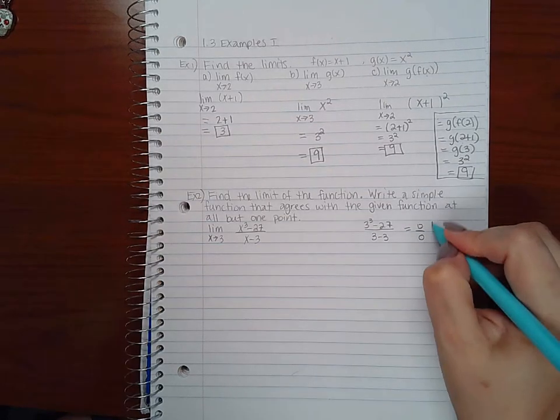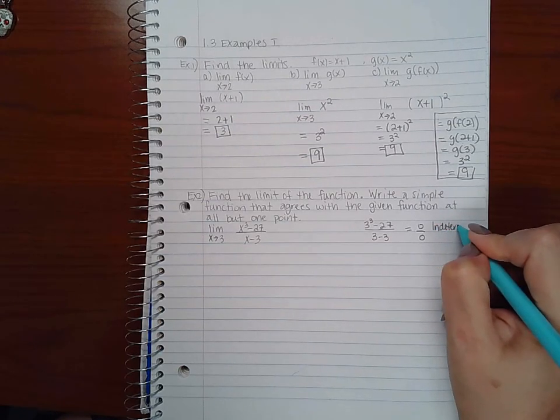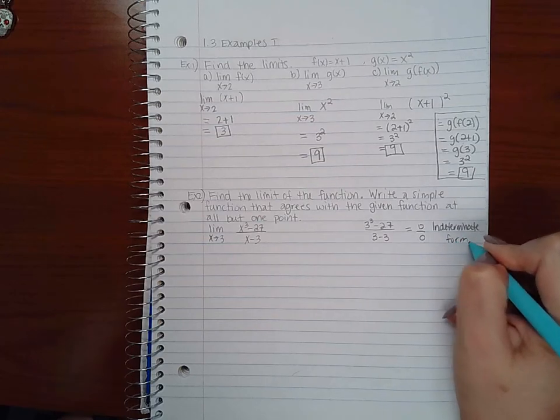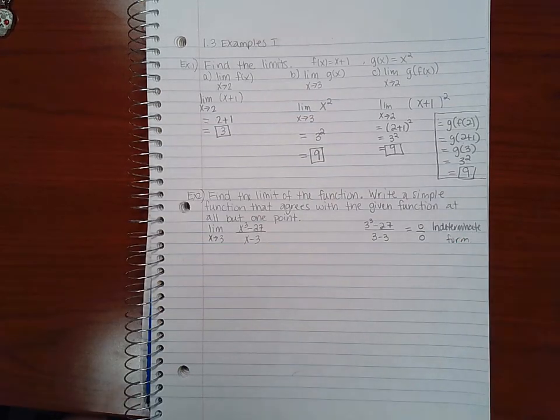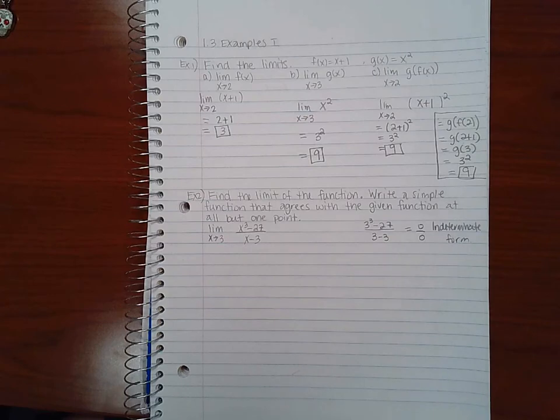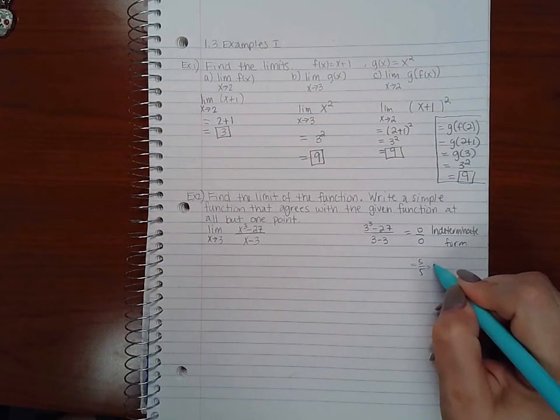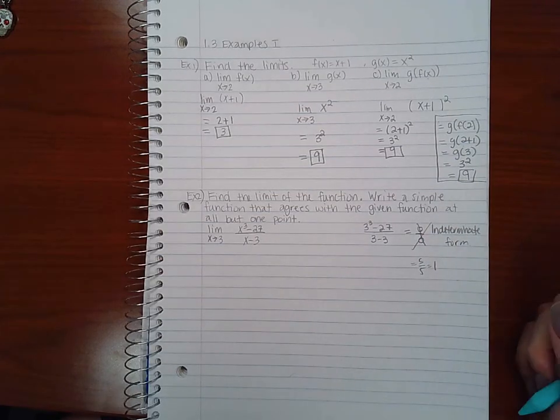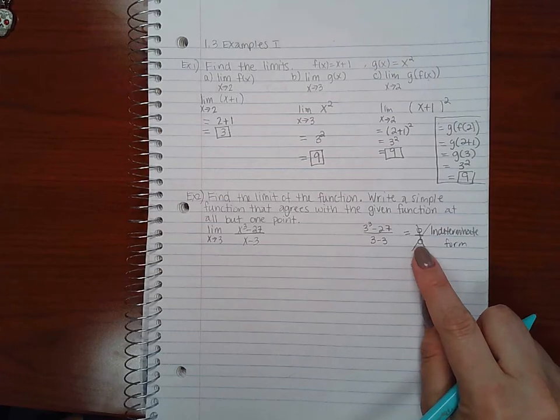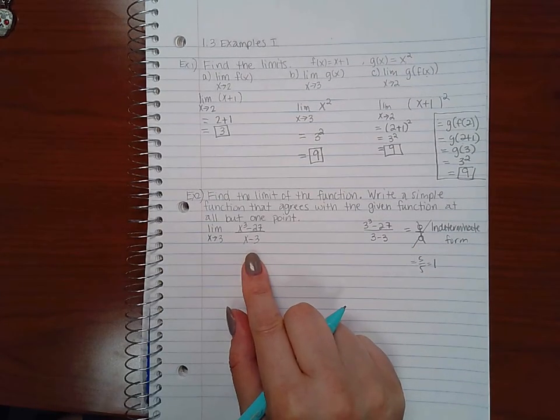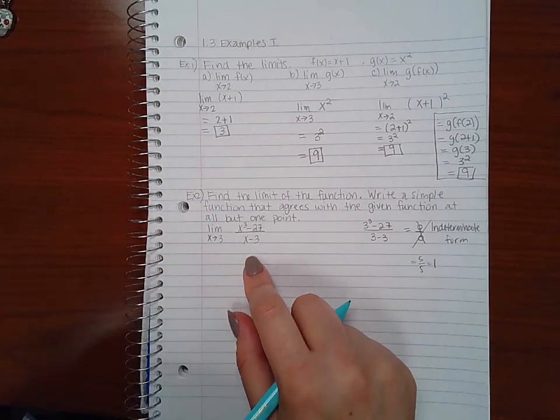This is what's called an indeterminate form. So you can't determine the limit when you get zero over zero. It's not like a regular number where if you got five over five it equals one, this doesn't work the same way. So that's an indeterminate form which means I cannot do this problem by direct substitution.